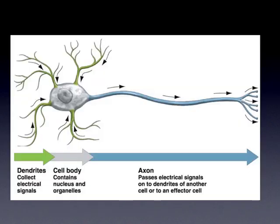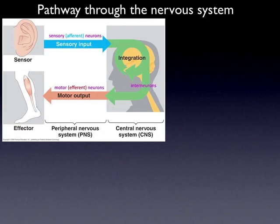Again, nerve impulses are transmitted from the dendrites down to the terminal. It happens electrically until it gets to the terminal, and then to cross the gap to the next dendrite, it happens chemically.